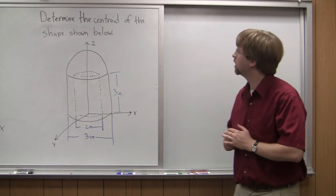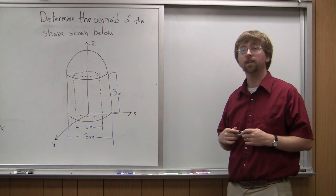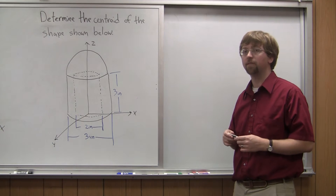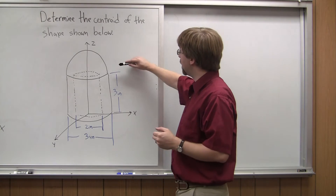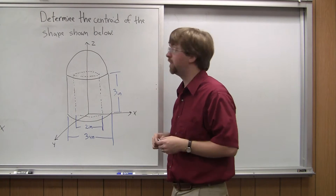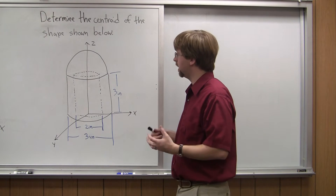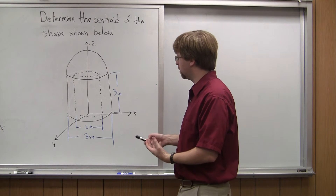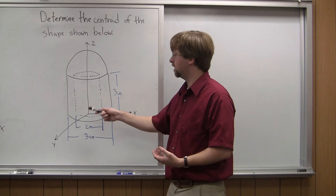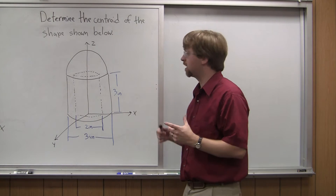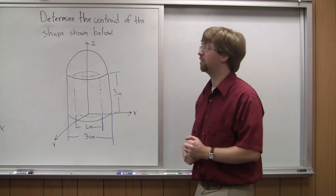Hello. For this video, we are looking for the centroid of the shape shown below. We're going to be using the method of composite parts to find this centroid. Our shape here is a hemisphere, or half of a sphere. It's going to be solid on top of what's basically a hollowed out cylinder. The outside diameter of this hollowed out cylinder is 3 inches, and the hollowed out area in the middle has a diameter of 2 inches. That's going to go all the way through the cylinder, but not into the hemisphere.